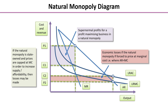If this natural monopoly were state owned and prices were capped at the point of allocative efficiency — where marginal cost equals price — that would increase supply and affordability. However, the firm would make losses, shown by the pink area on the diagram, because average revenue is below average cost at the allocatively efficient output. It may be acceptable for the state to accept losses from utilities such as gas, electricity, and sewerage, as these are essential services. This demonstrates that if you want a natural monopoly to be allocatively efficient, it is likely to make losses.